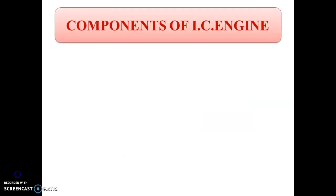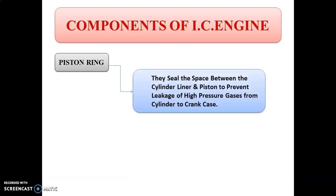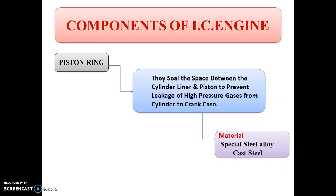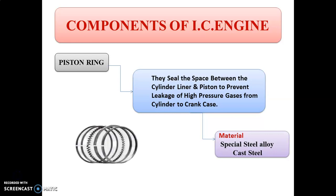The next component is the piston ring. The piston rings are inserted in the grooves of the piston. The function of the piston ring is to seal the space between the cylinder liner and the piston to prevent the leakage of high pressure gases from the cylinder to the crankcase. There are two types of piston rings: oil ring, of which one ring is used, and compression ring, of which two rings are used. The material for piston rings is special steel alloy and cast steel. The figure shows the different piston rings used for internal combustion engine.